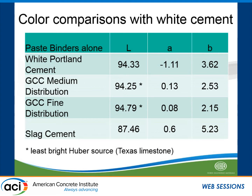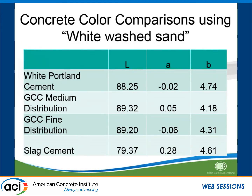I want to point out that the limestone used in this study was from our Texas source, which is the least bright source we have available to us. Looking at the impact of sand on color, these are the same types of measurements using white Portland cement, with a 20% replacement of the white Portland cement with GCC, and the same with the slag. Once again, you can see that using GCC actually increases the L value and decreases the B values, making it even brighter. So even in the concrete with the effect of the sand, using our Texas material — a Texas whitewashed sand — gives you much better values.